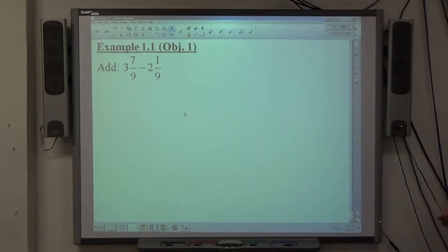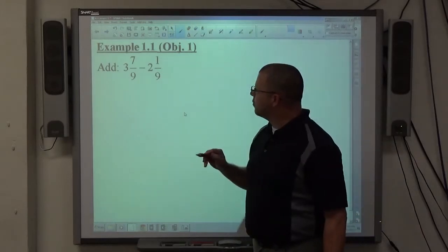All right, example 1.1, we have 3 and 7/9 minus 2 and 1/9. We're doing mixed number subtraction.